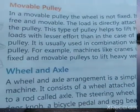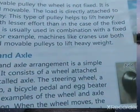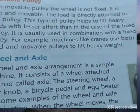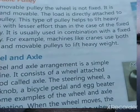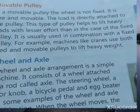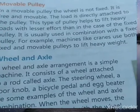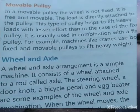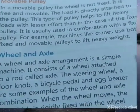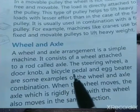This type of pulley helps to lift heavy loads with lesser effort than in the case of the fixed pulley. It is usually used in combination with a fixed pulley. For example, machines like cranes use both fixed and movable pulleys to lift heavy weights.